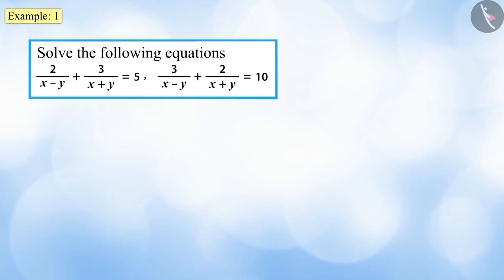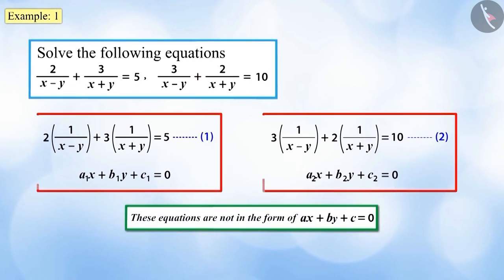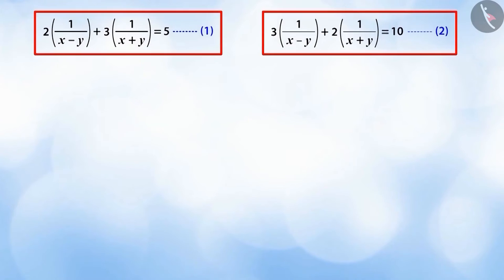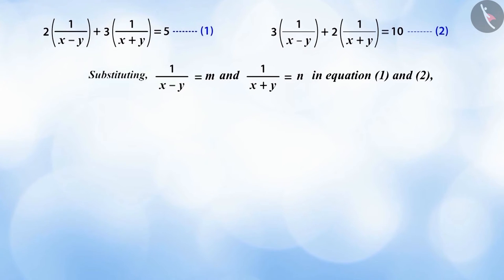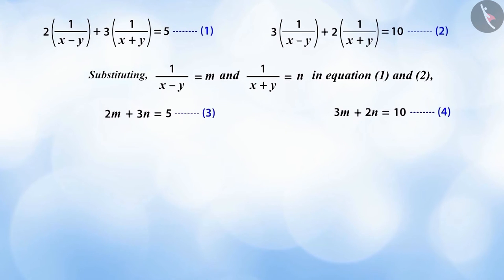Solve the following pair of equations. If this pair of equations is written out, you will observe that this is not the form of a pair of linear equations because ax + by + c ≠ 0. To solve this, by some important replacements we can change it into a pair of linear equations. If we put 1/(x − y) = m and 1/(x + y) = n in equations one and two, we get equations three and four, which represent a pair of linear equations in two variables.